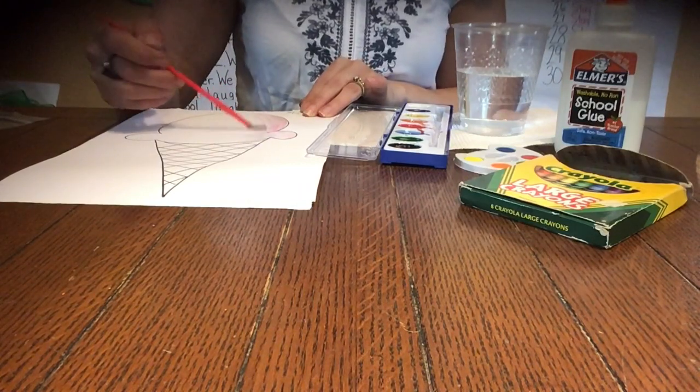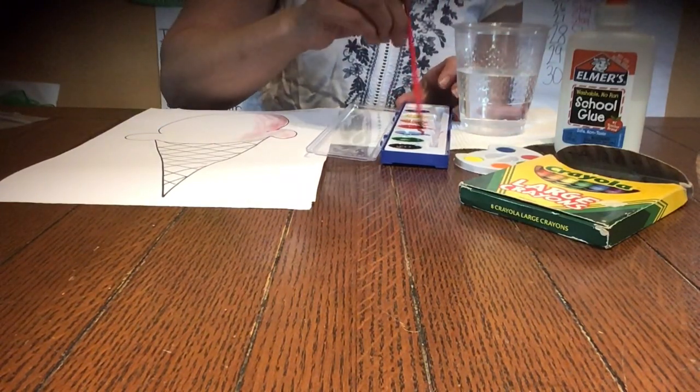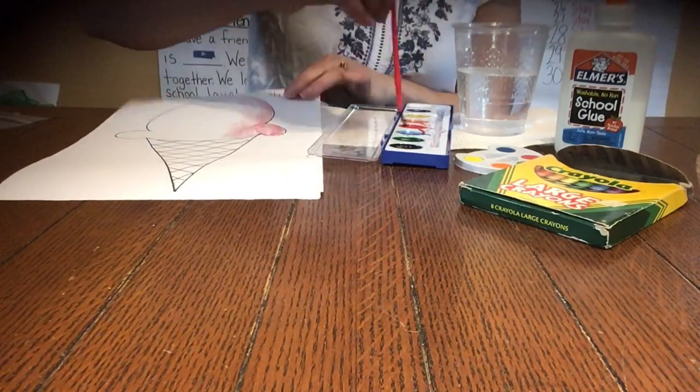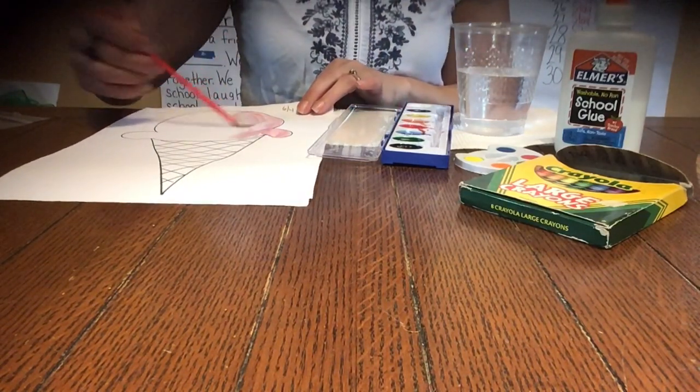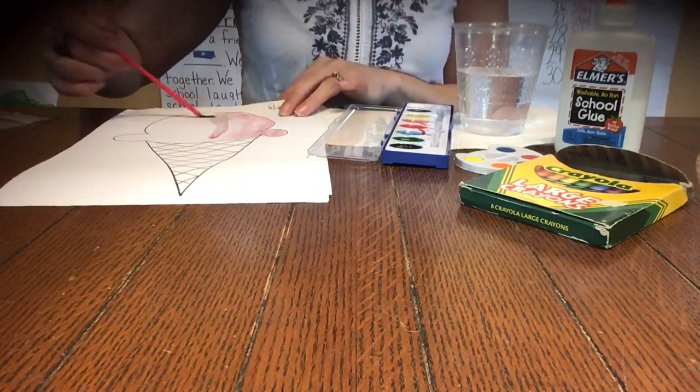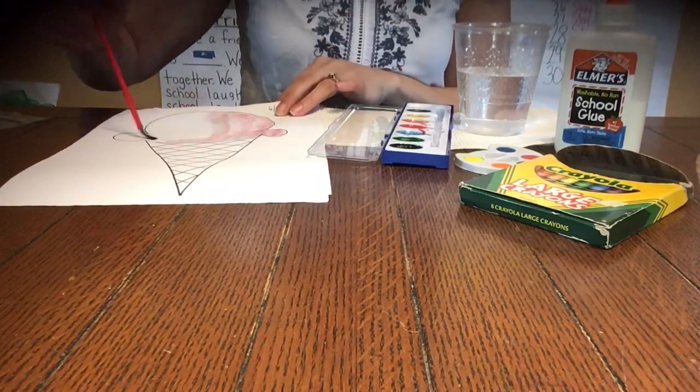So paint it up. Now it's not turning really red because strawberry ice cream is kind of pinkish. So I'm just getting it wet enough with the color and spreading the color all around.